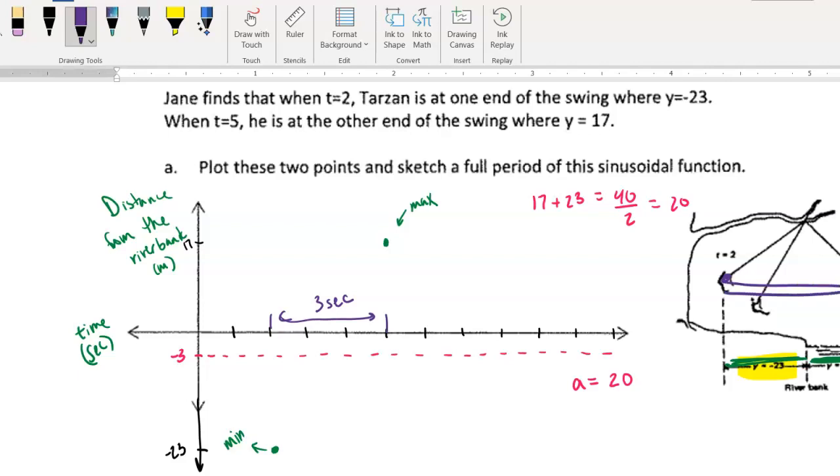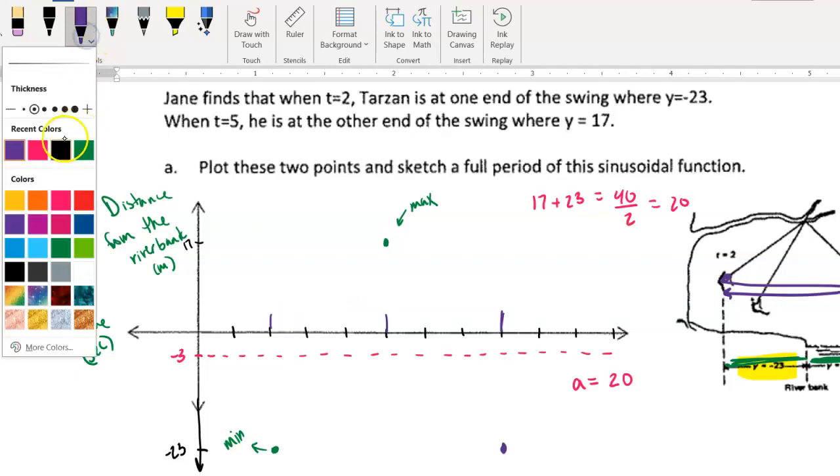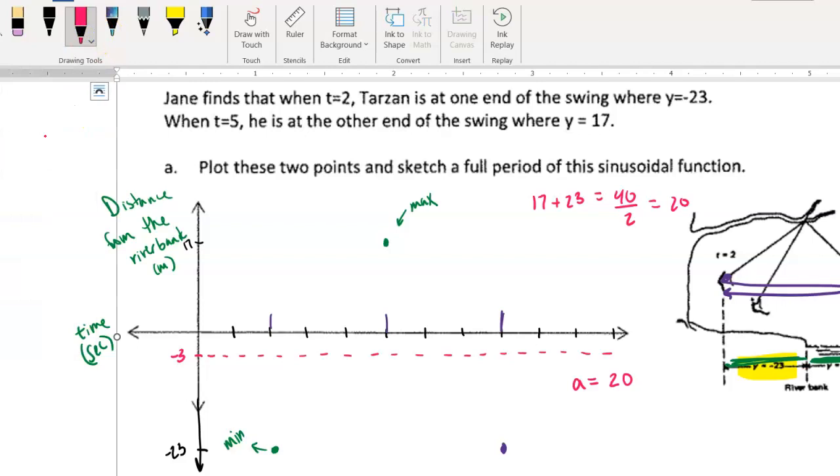So to come back, it's going to take another 3 seconds. So if I count over 1, 2, 3, that's how long it's going to be for him to come back to that minimum point of negative 23.